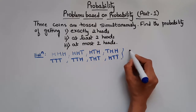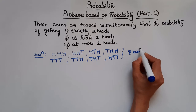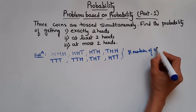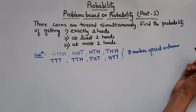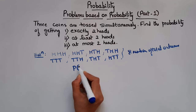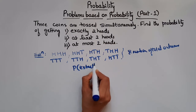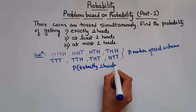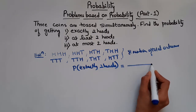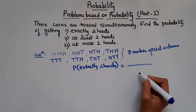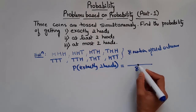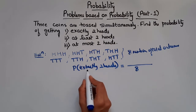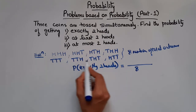So we have 8 total outcomes. Now using the probability formula, P of E where E is exactly 2 heads — which is equal to the ratio of number of outcomes favorable to E by total number of possible outcomes. Here the total number of possible outcomes is 8.